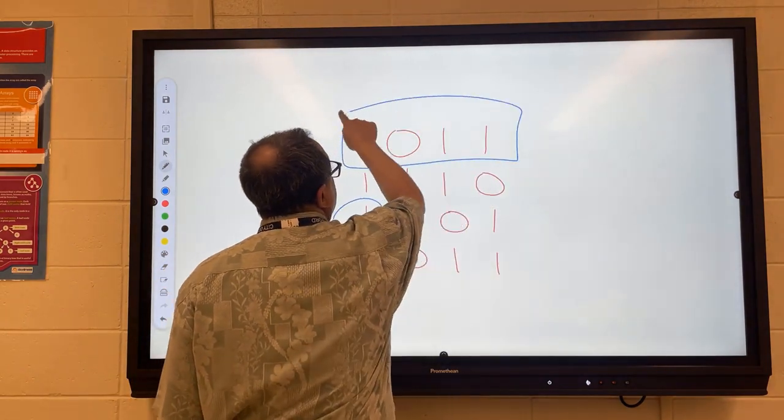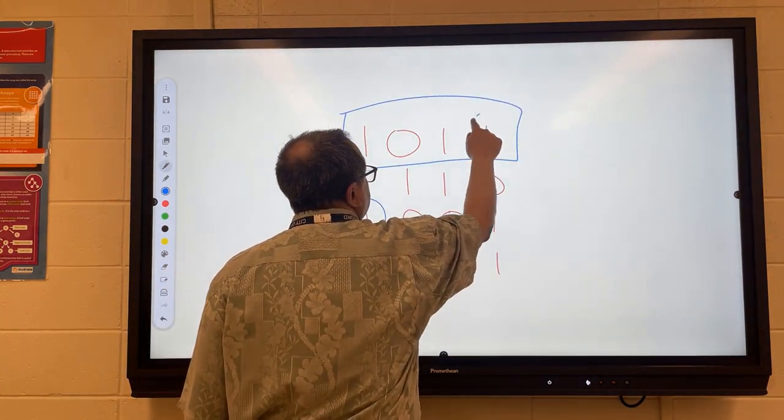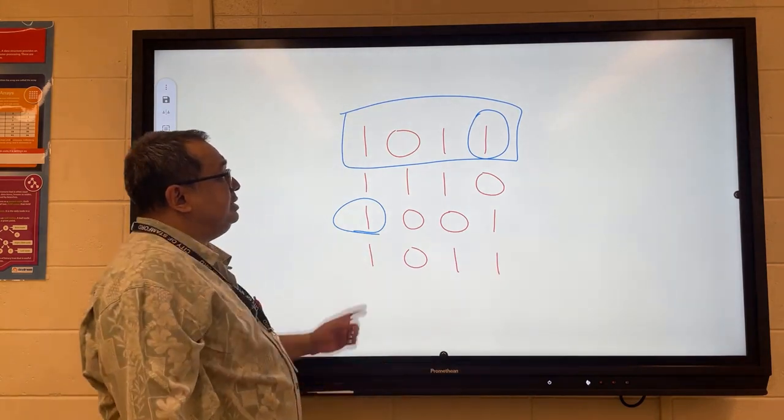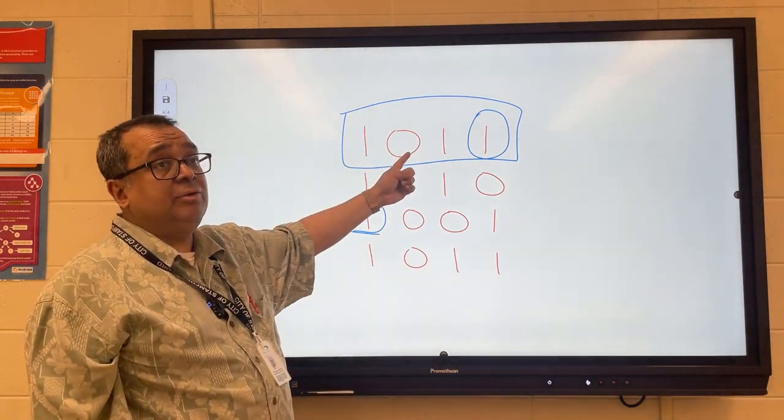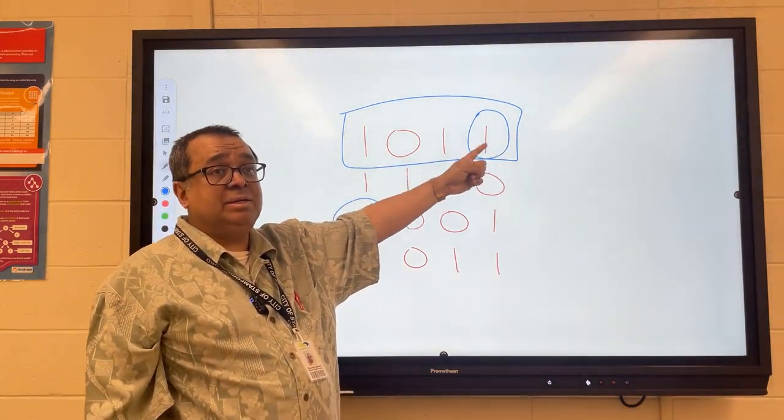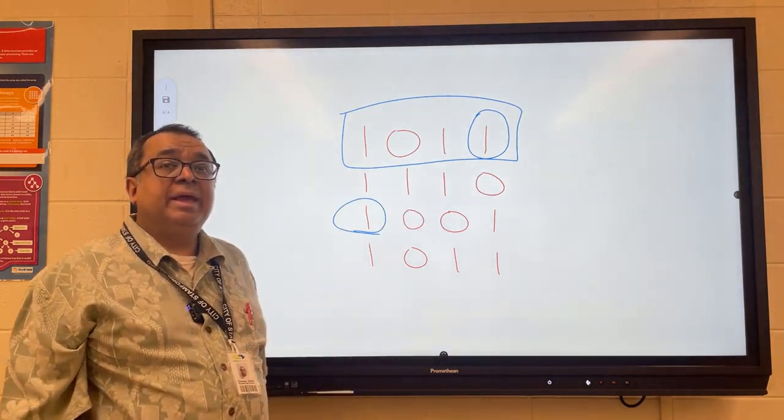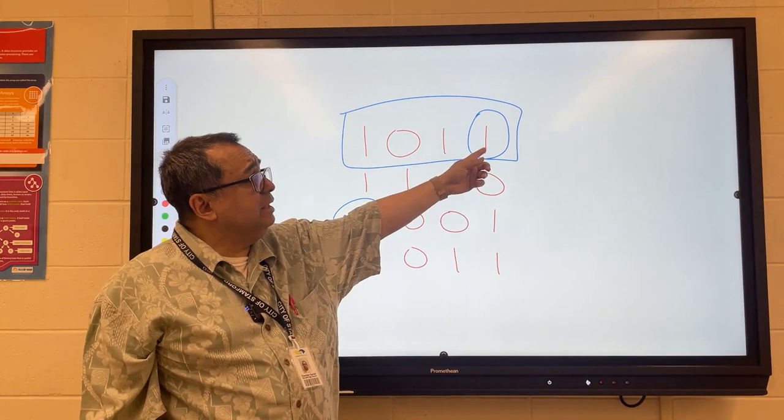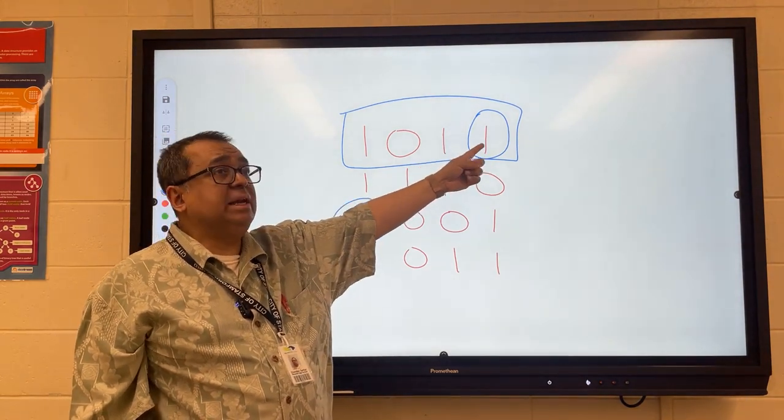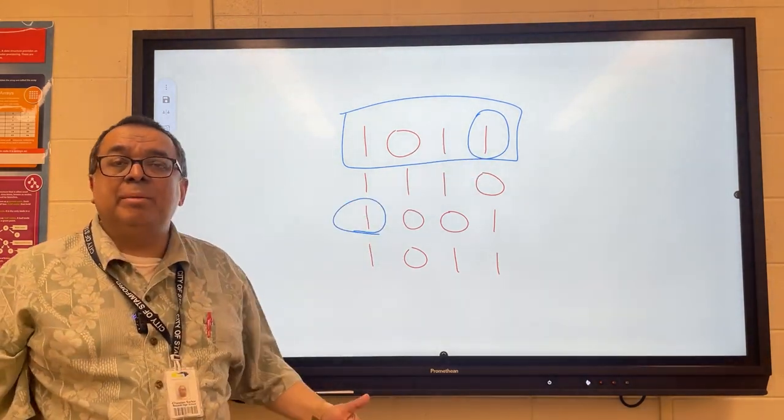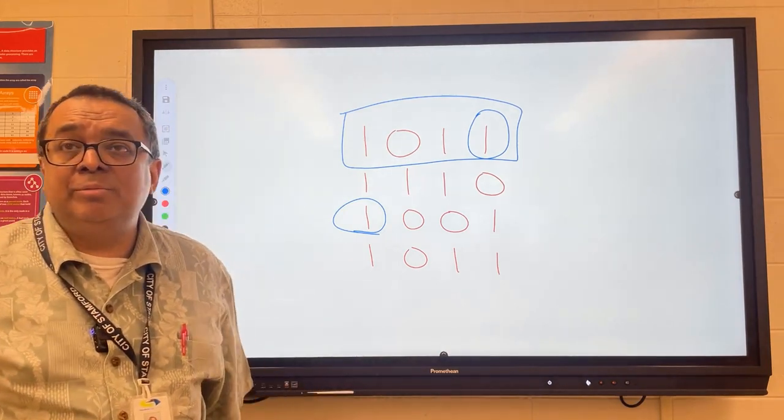Now if I was to just look at one row here, let's take a look at this row. We know that this particular bit here is the parity bit. So this is the payload, three bits of payload, and I've added this parity bit to make sure that the number of ones here is odd. If I was to randomly select a parity bit, what would be the probability that the parity bit would be correct?